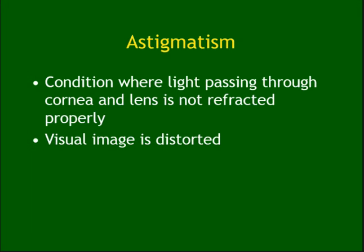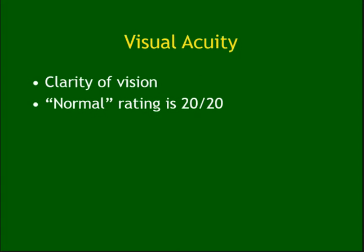The cornea should be perfectly curved; if there is some irregularity in the curve, it gives you an error of refraction — that is called astigmatism. It gives you a distorted picture. Normal visual acuity should be 20/20; anything less than that is abnormal.